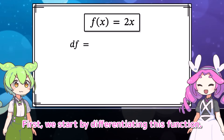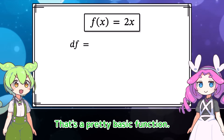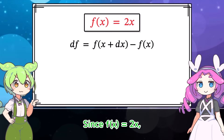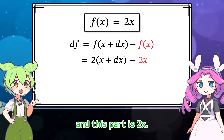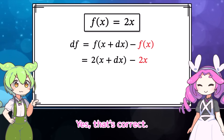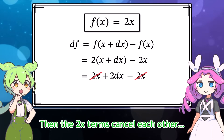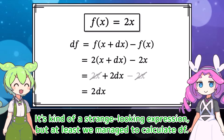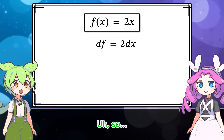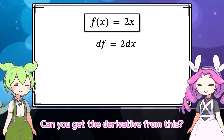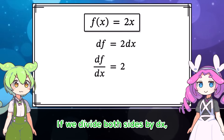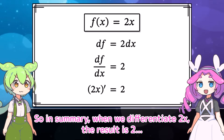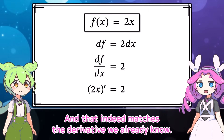First, we start by differentiating f of x equals 2x. That's a pretty basic function. Let's calculate df according to the definition. Since f of x equals 2x, this part becomes 2 times x plus dx, and this part is 2x. Let's expand the parentheses — the 2x terms cancel each other, and only 2dx remains. So df equals 2dx. If we divide both sides by dx, we get the derivative. So when we differentiate 2x, the result is 2, and that indeed matches the derivative we already know.